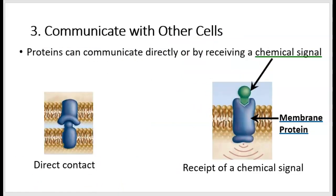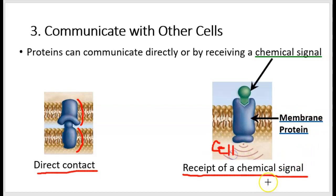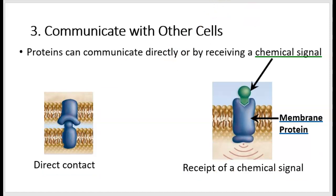Membrane proteins also communicate with other cells. They can communicate directly, like the gap junction we saw, but without necessarily allowing substances to cross. The transmembrane protein of one cell and the transmembrane protein of another cell can bind, linking the two cells — that's called direct contact. Another way membrane proteins are involved in communication is through chemical signaling, where they receive a chemical signal. The membrane protein, shown in blue, can bind to a chemical signal and cause a reaction inside the cell. We call this membrane protein a receptor.